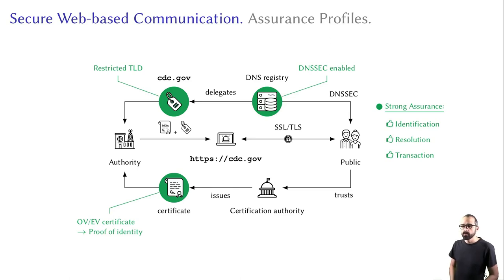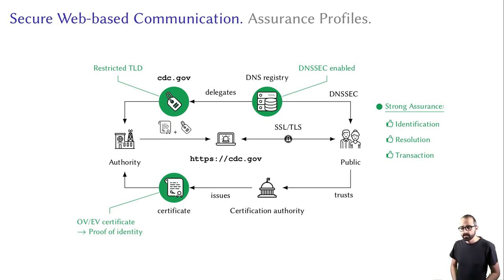Let's say that you want to visit cdc.gov. The .gov restricted TLD indicates that you're interacting with a governmental website. DNSSEC guarantees that your resolution is protected, and the OV certificate provided by CDC shows you exactly with whom you're communicating. So identification, resolution, and transaction are all safe and protected. We call such a setting a strong assurance profile.